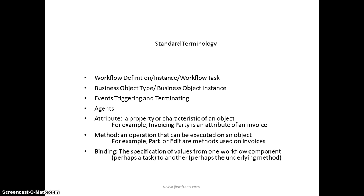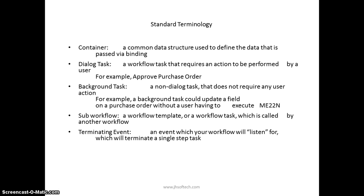An attribute is an additional feature of a particular task or process. A method is an operation that can be executed on an object. Binding is the specification of values passed from one workflow component to another workflow component. A container is a common data structure used to define the data that is passed by a binding — it holds that particular structure. A dialogue task is a workflow task that requires an action to be performed by a user; the workflow will not proceed further until that action is completed. An example is approving a purchase order.